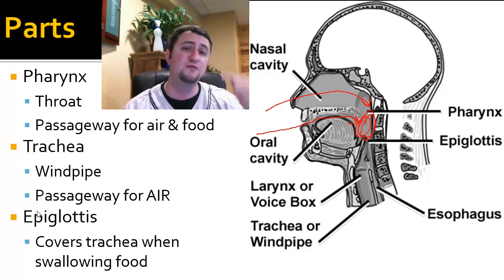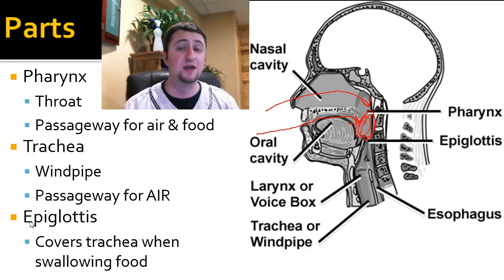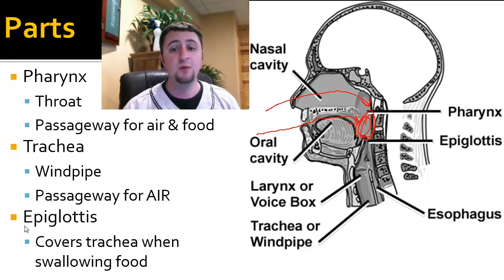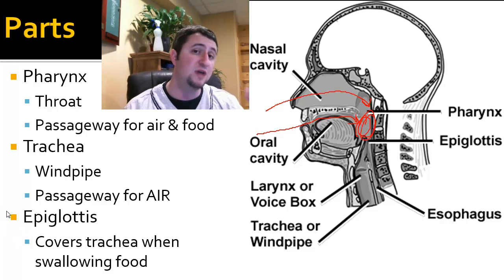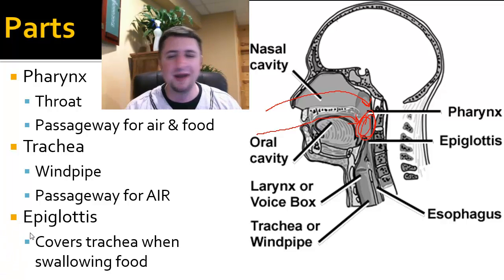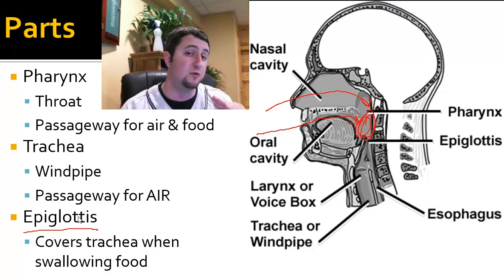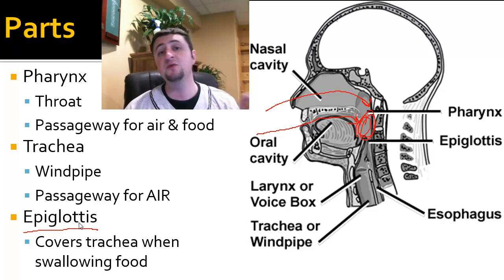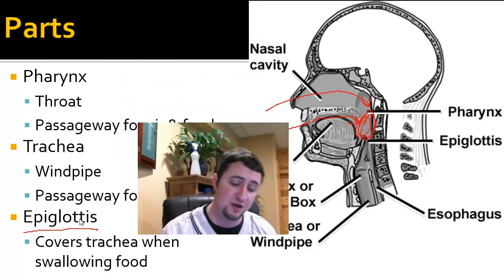If you ever get food or drink down your windpipe, you cough like crazy. We don't want food or drinks to go down into our lungs — that's bad, that would eventually suffocate us. So our body has this little organ called the epiglottis that folds over and covers up the windpipe or trachea, and allows food to only go one direction: down through the esophagus and into our stomach.